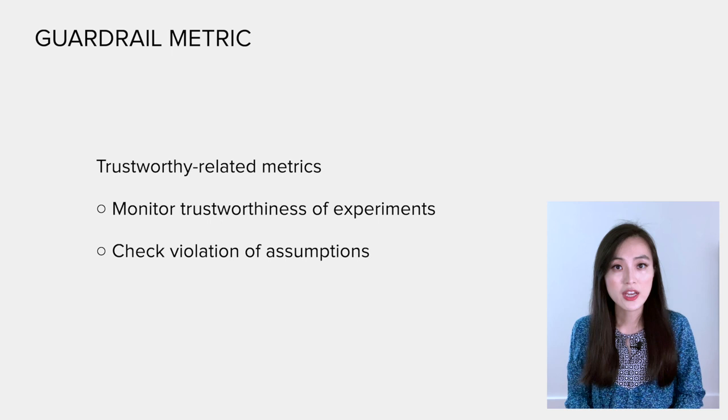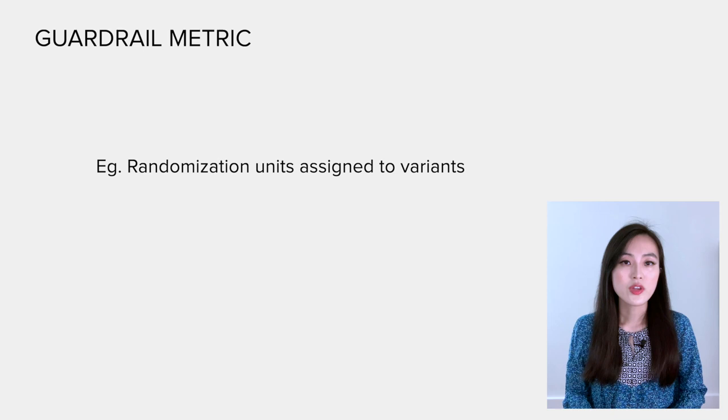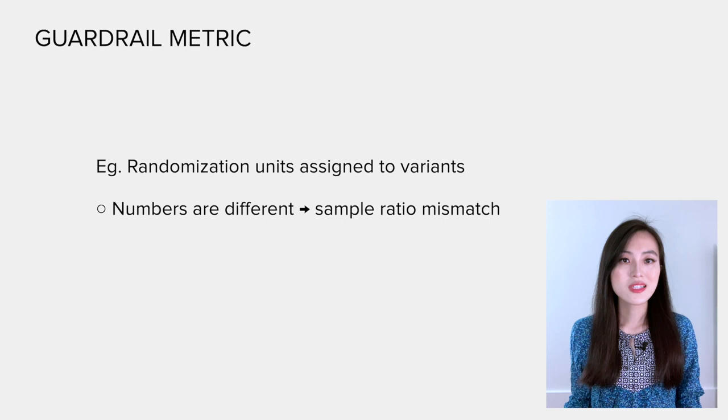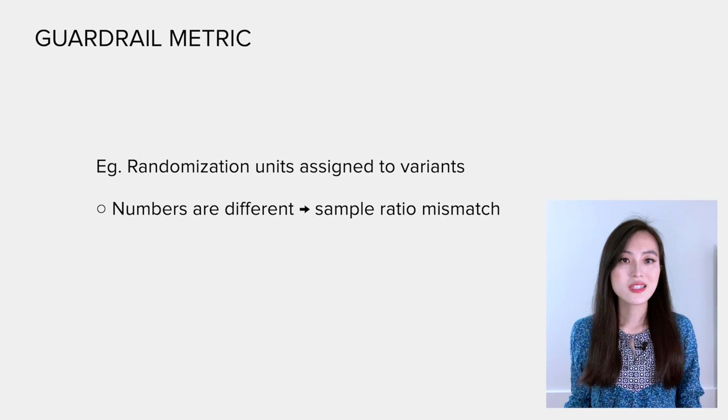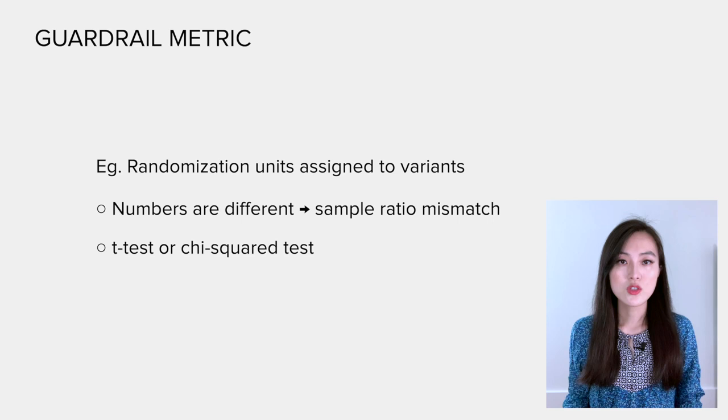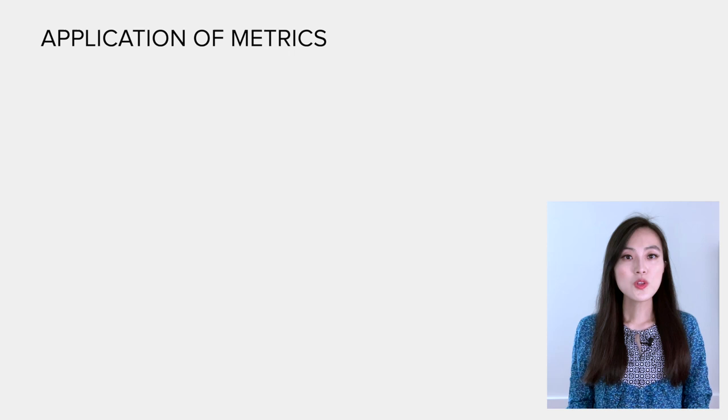The other kind of guardrail metric is trustworthy-related metrics. They are used to monitor the trustworthiness of an experiment, that is to check if there is any violation of its assumptions. One of the commonly used metrics is to check if randomization units assigned to each variant is truly random. When the numbers in different groups are different, the authors refer this as sample ratio mismatch. We then need to perform a t-test or a chi-square test to check if the assignment ratio matches with what was designed.